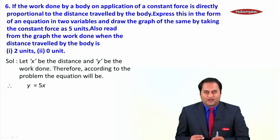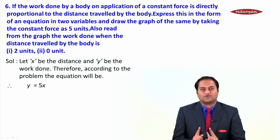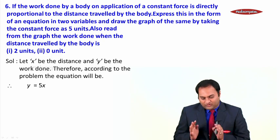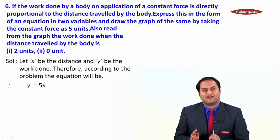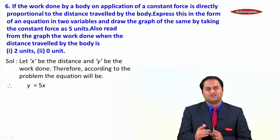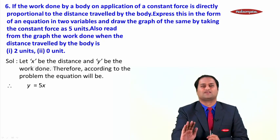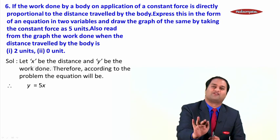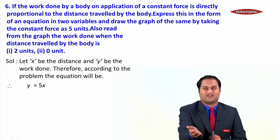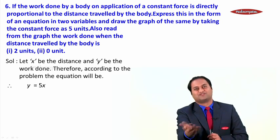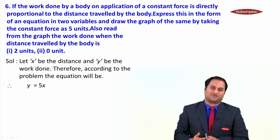The key trigger here is to first assume one quantity as x and the other as y. Otherwise, if you only keep trying to understand the problem without assigning variables, you will never be able to form the equation. So assume one quantity as x and the other as y, note the direct proportionality, write y = kx, substitute k = 5, and you get y = 5x — as simple as that.